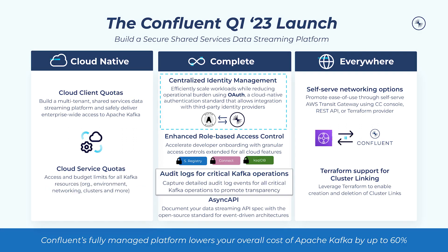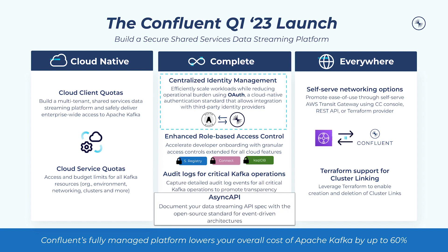Within the Complete pillar, we bring you audit logs for all critical Kafka operations, which can capture, protect, and preserve Kafka authentication actions, authorization actions, and organization operations into topics in standard and dedicated clusters. We also bring you Async API, an open-source API specification language that has gained popularity among the event-driven ecosystem. Confluent's Async API tool allows users to easily capture their Confluent Cloud implementation in concise API specifications that provide internal teams with a safe, easy means to understand their architecture and consume events.